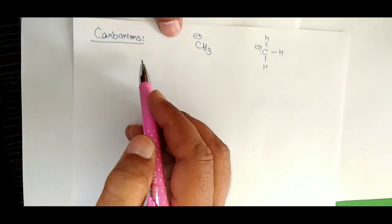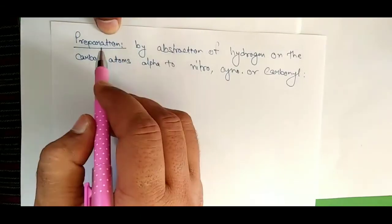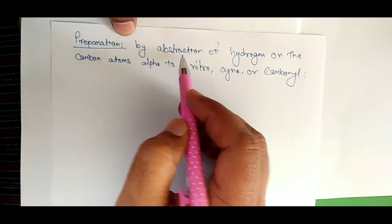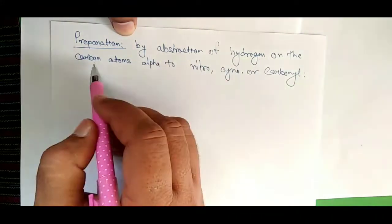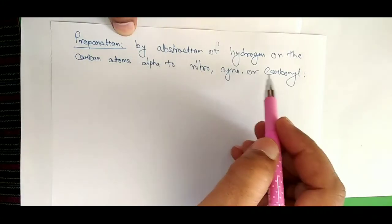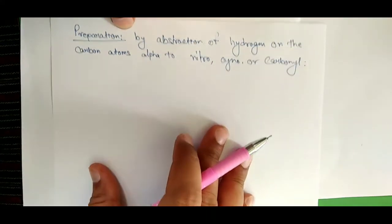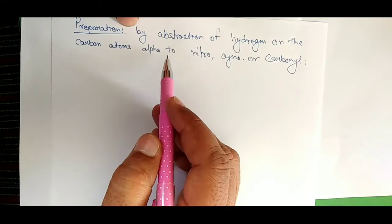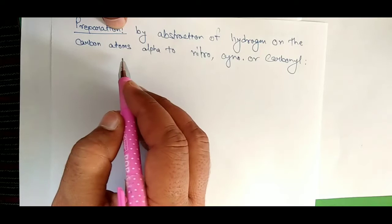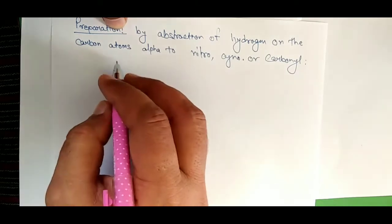Now we will study how we can prepare different carbanions. The first preparation method involves abstraction of hydrogen on the carbon atom alpha to nitro, cyano, or carbonyl groups. Let us discuss the example of how this abstraction of hydrogen takes place.